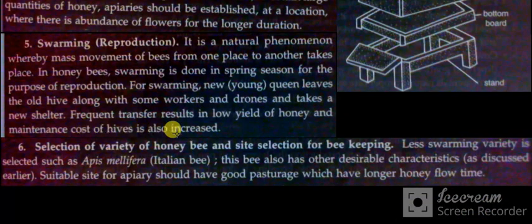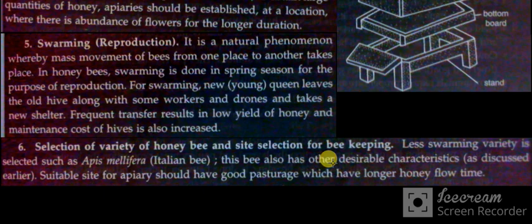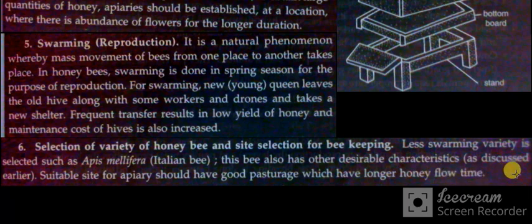Frequent transfer results in low yield of honey, and maintenance cost of the hive is also increased. Selection of variety: For beekeeping, a less-swarming variety is selected, such as Apis mellifera, the Italian bee. This bee also has other desirable characteristics.